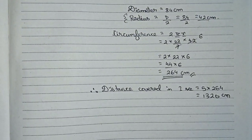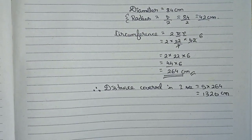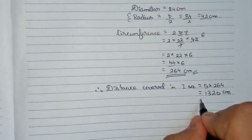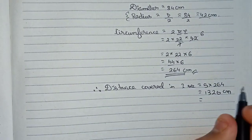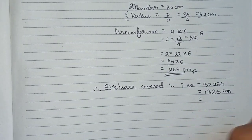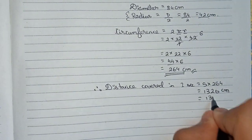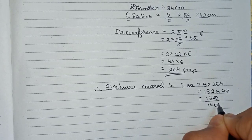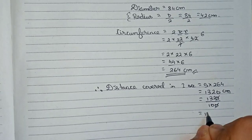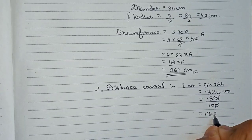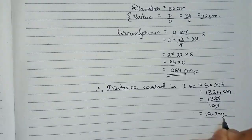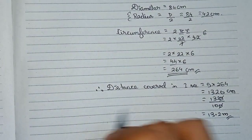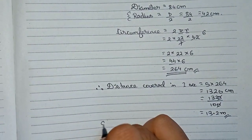This is the distance covered in one second. Now converting centimeters to meters: 1320 divided by 100 gives 13.2 meters. From this we can find out the speed.